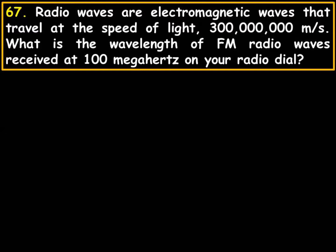Easy. Radio waves are electromagnetic waves that travel at the speed of light, which is 300 million meters per second. What is the wavelength of FM radio waves received at a 100 megahertz on your radio dial? Okay, let's look at this for just a second.